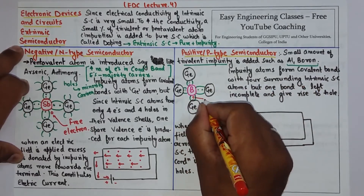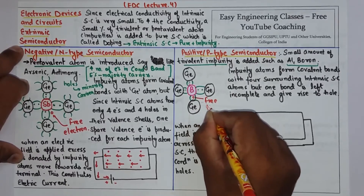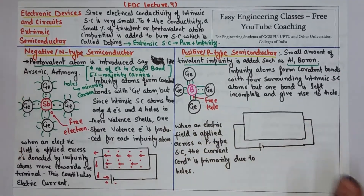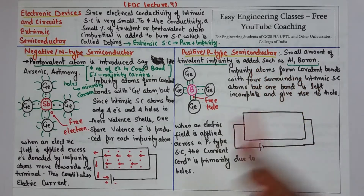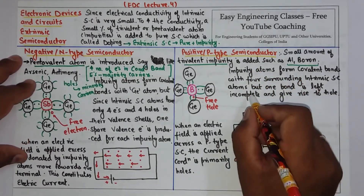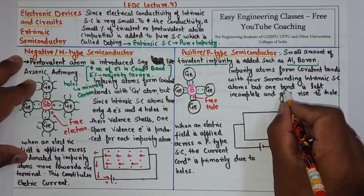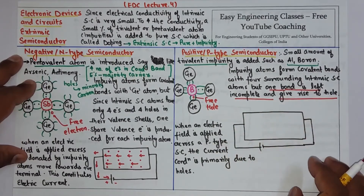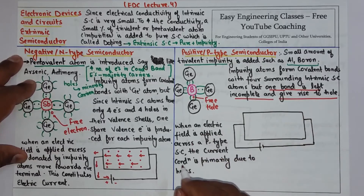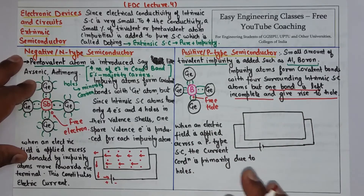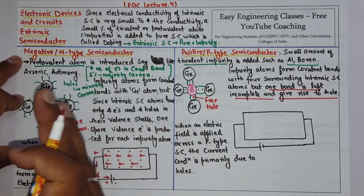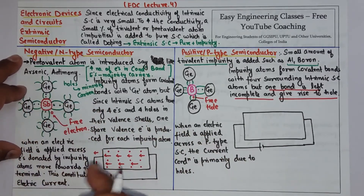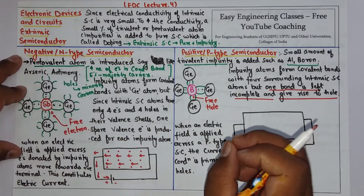A hole is created where the incomplete bond exists. So when you add a trivalent impurity, you get one hole for every impurity atom. When an electric field is applied across a p-type semiconductor, there is current conduction. Unlike n-type where conduction is due to electrons, current conduction in a p-type semiconductor is primarily due to holes.